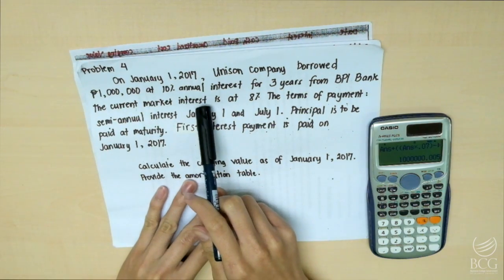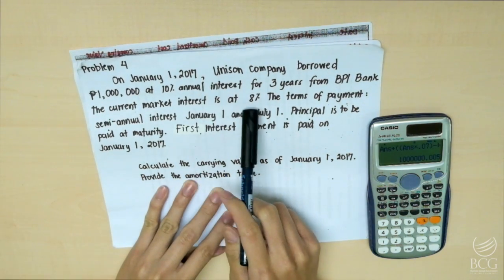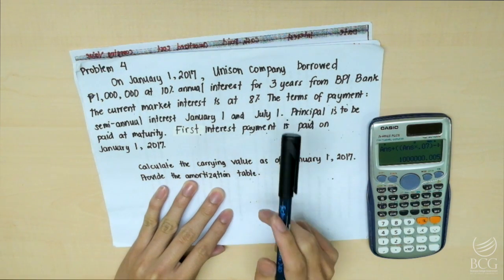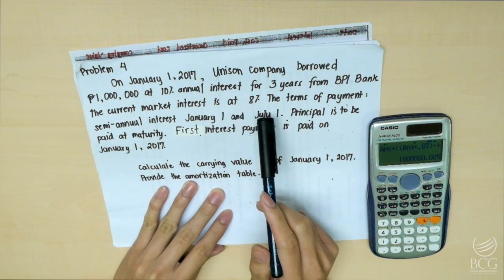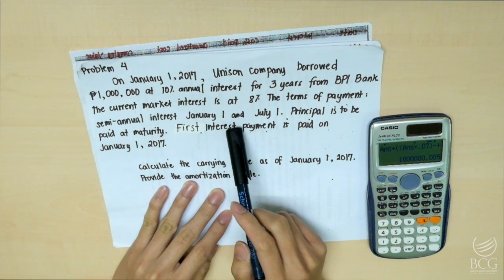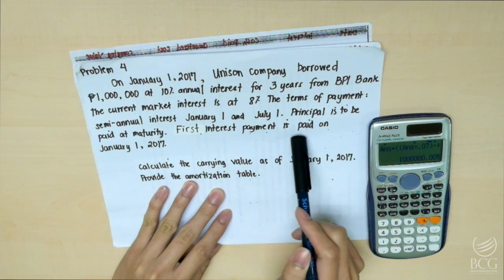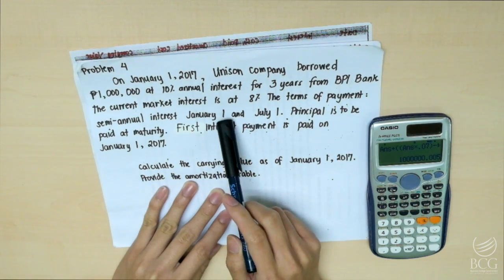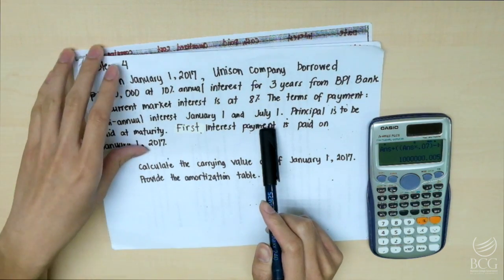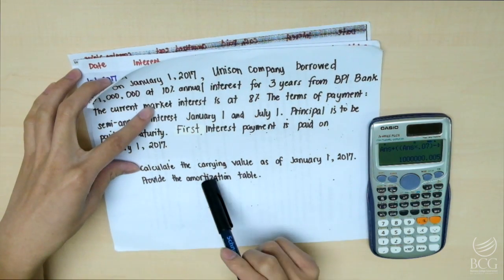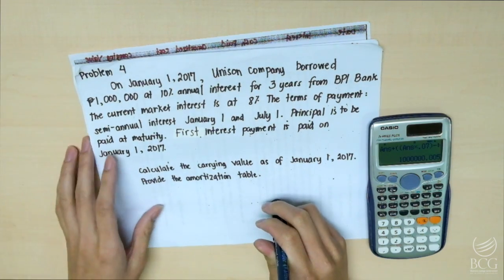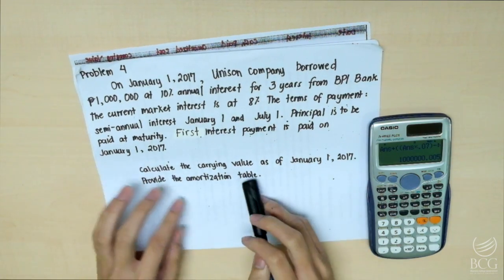First, the nominal rate is greater than the effective rate. Hence, we're going to expect that the debt is at a premium. Second, the first interest payment was paid on the day the debt was acquired. So this is going to be the present value of annuity due. Now let's compute the carrying value first.